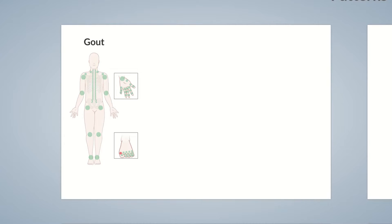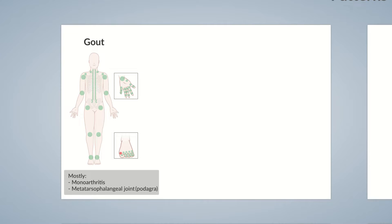Let's start with monoarthritis. One example is gout, which classically presents as an acute monoarthritis of the metatarsophalangeal joint of the big toe. It's also termed podagra, the Greek word for foot trap. A significant case of gout can also result in swelling of the forefoot. It's so painful that even contact between the toe and bed linen can cause pain.